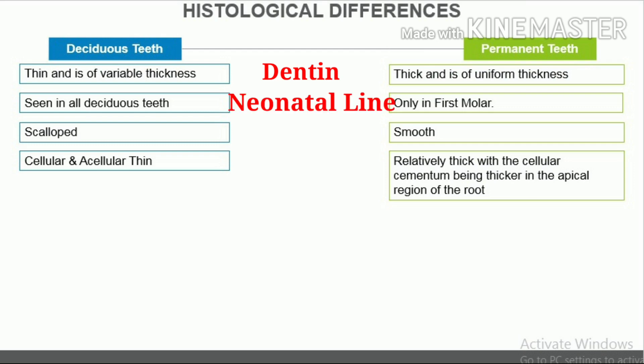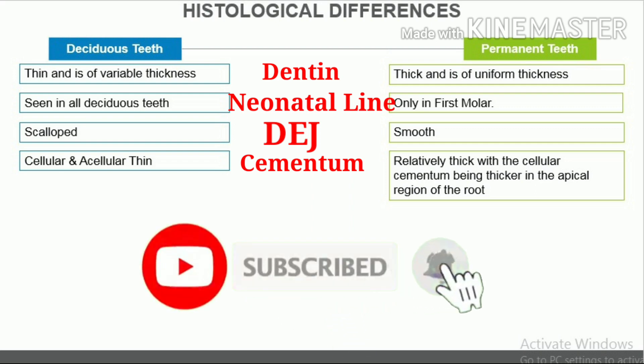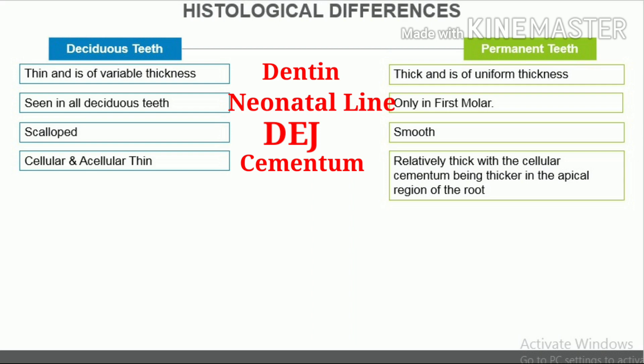Neonatal lines. The neonatal line is seen in all deciduous teeth. In permanent teeth, the neonatal line is seen only in the permanent first molars because the first evidence of calcification of this tooth starts at birth. Dentino-enamel junction. The dentino-enamel junction is usually scalloped in deciduous teeth, and smooth in permanent teeth. Cementum. The acellular and cellular cementum is relatively thin in deciduous teeth. In permanent teeth, the cementum is relatively thick, with the cellular cementum being thicker in the apical region of the root.